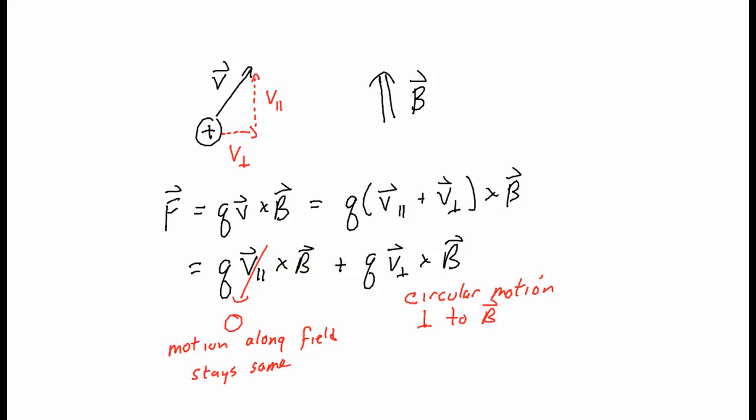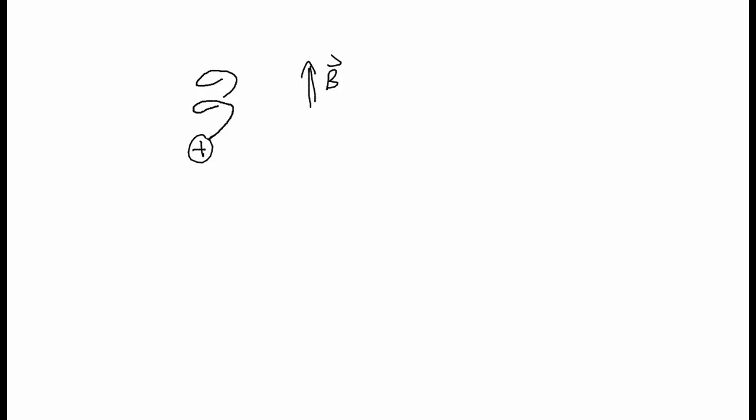That is, this charge is going to be moving upward, but it's also going to be circling around in and out of the page. So if I've got B pointing upward, this positive charge is going to have an upward motion but also a circular motion — basically it's going to move in a helical path. Generally speaking, charges which move in a uniform magnetic field move in a helical path.